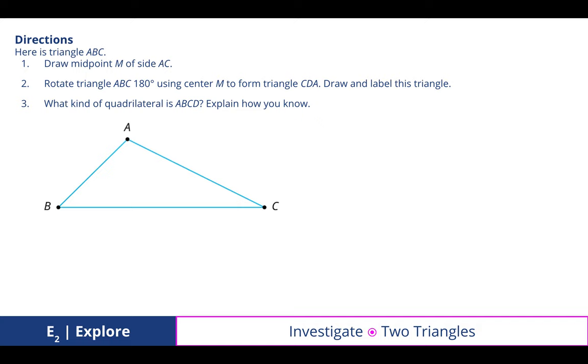Here is triangle ABC. We're asked to find the midpoint and then rotate that 180 degrees and see what happens. What kind of quadrilateral is formed, which we are going to label ABCD. I'm actually going to show this with my document camera.